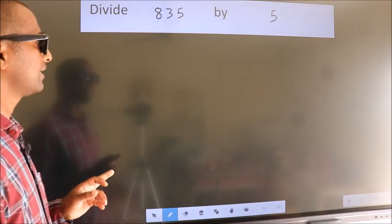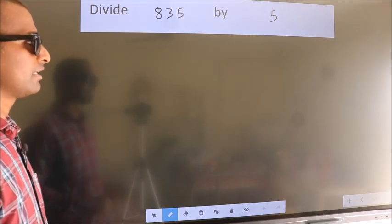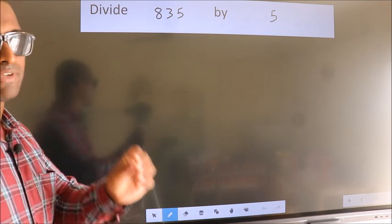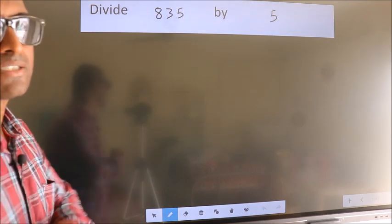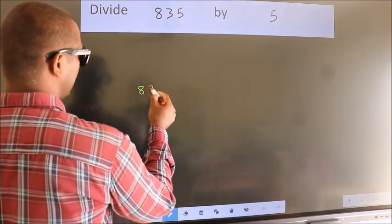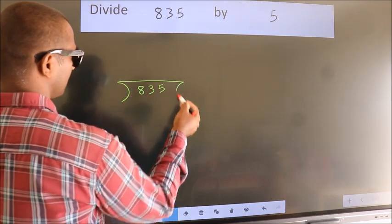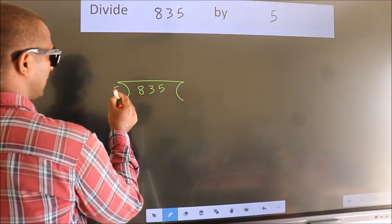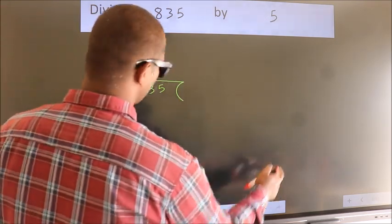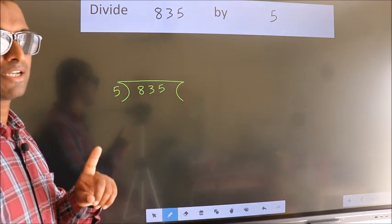Divide 835 by 5. To do this division, we should frame it in this way: 835 here, 5 here. This is your step 1.